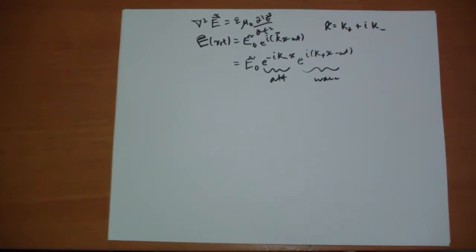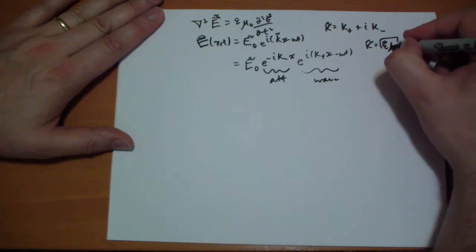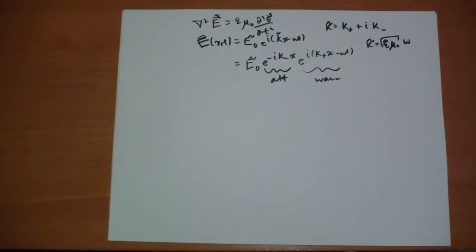And kappa is also the square root of epsilon, which is complex, mu naught times omega. Remember epsilon depends on omega. It's also complex, it's out of phase. So if we were talking about the intensity, we would take E squared, and so we would have our attenuation.